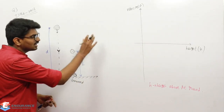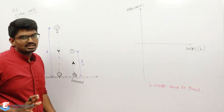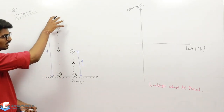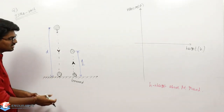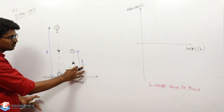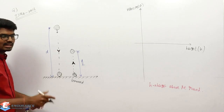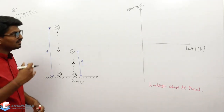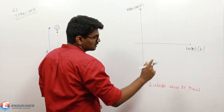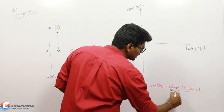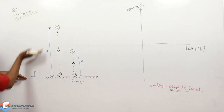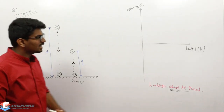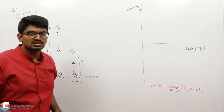They also said to neglect the subsequent motion. After reaching d/2, the ball would come back and bounce again, but we are asked to neglect that. They have given a plot between velocity and height, and they mentioned that height is above the ground. This means height h has to be measured upward from the ground.